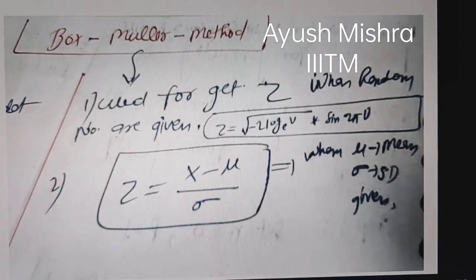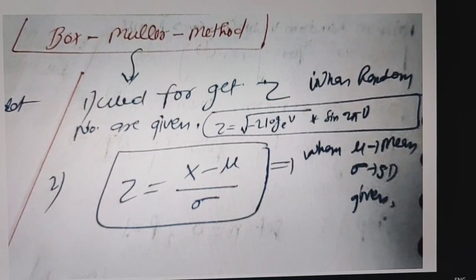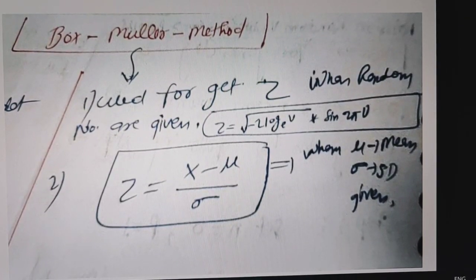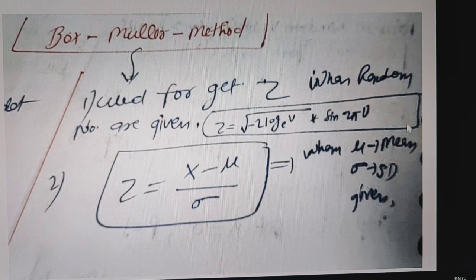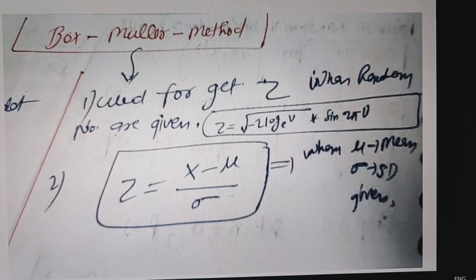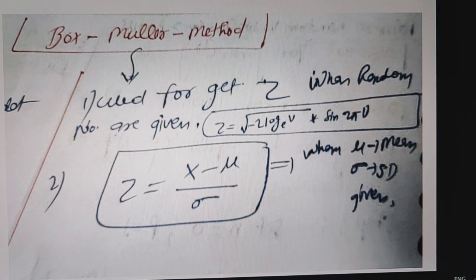Hello guys. Now I am going to discuss another very important concept in modeling and simulation, that is the Box-Muller method. Here we use a simple formula for calculation of z, and another extended formula which is z equals x minus mu divided by sigma, where mu is the mean and sigma is the standard deviation. So I will discuss the derivation for this.